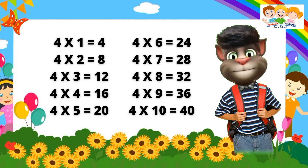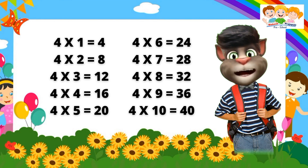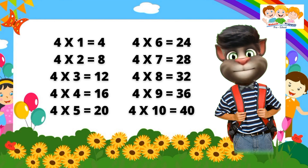Four one's are four. Four two's are eight. Four three's are twelve. Four four's are sixteen. Four five's are twenty. Four six's are twenty-four. Four seven's are twenty-eight. Four eight's are thirty-two. Four nine's are thirty-six. Four ten's are forty.